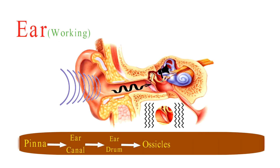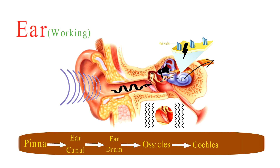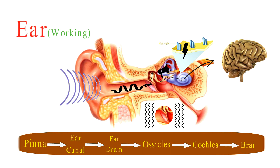Inside the inner ear, we have the cochlea — our star performer. The cochlea is filled with fluid, and inside there are thousands of tiny hair cells. As the fluid vibrates, these hair cells start dancing too, bending and swaying to the music. This is where the magic becomes electric: those dancing hair cells convert the sound into electrical signals. These signals travel through the auditory nerve like musical notes in a wire, heading straight to the brain for processing.